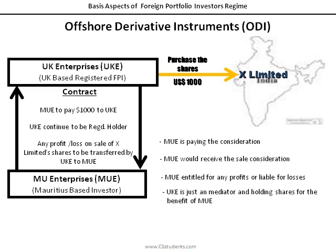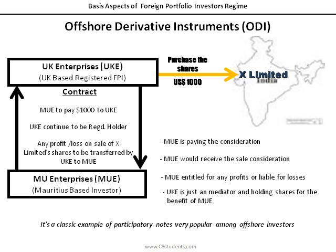This contract is called a Participatory Note. Through this instrument, MU Enterprises is participating in the holding of X Limited shares even without registering as FPI in India. Participatory Notes has been a very prominent structure for making portfolio investments in India. Currently, foreign institutional investors are allowed to issue the Participatory Notes.